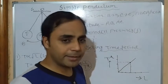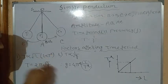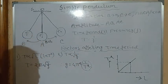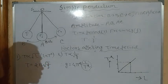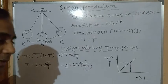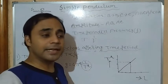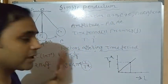Increase in effective length increases time period; decrease in effective length decreases time period. Time period is also inversely proportional to the square root of acceleration due to gravity. These are experimentally observed values, and the full formula is T = 2π√(L/g). You can verify this at home by measuring the time for 20 or 40 oscillations of a simple pendulum.